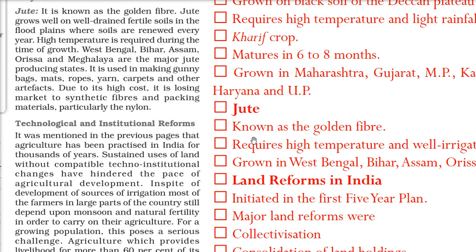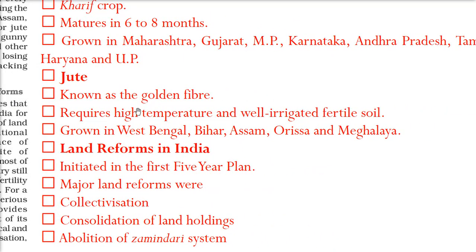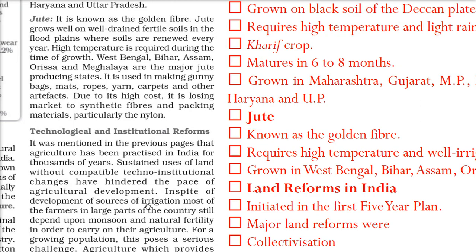Now coming to jute, which is also known as the golden fiber. It requires high temperature and well-irrigated, fertile soil. It is grown in West Bengal, Bihar, Assam, Odisha, and Meghalaya. Jute is used to make gunny bags, mats, ropes, yarns, carpets, and other artifacts.